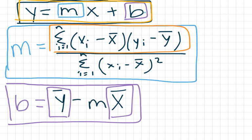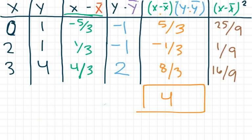We also need to take the sum of the column where we squared (x minus x̄). That gives us twenty-five over nine plus one over nine plus sixteen over nine, which is forty-two over nine.